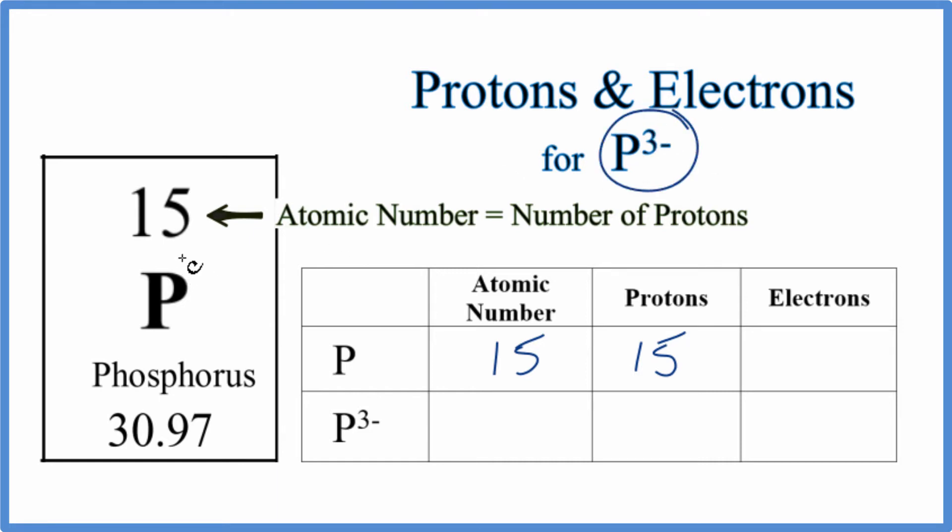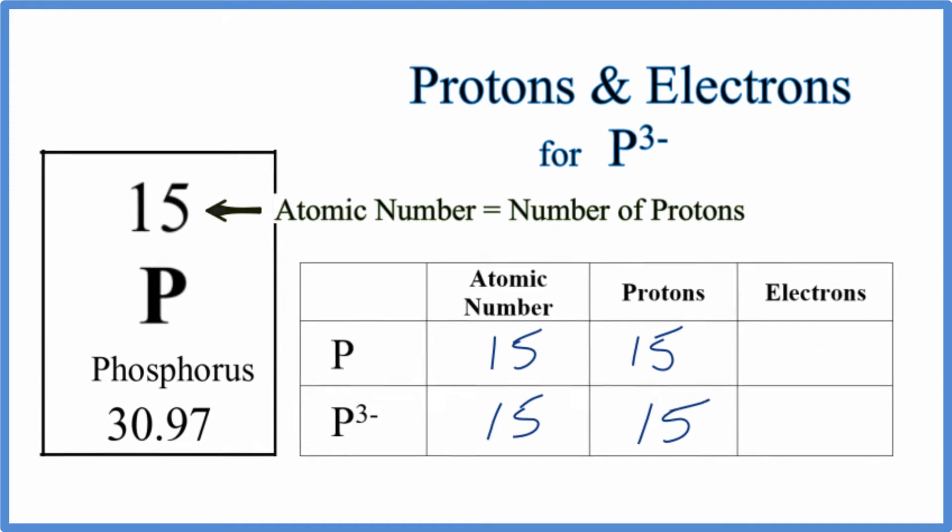When we're comparing an ion like P3 minus to just P, phosphorus neutral phosphorus, the only thing that's going to be different is the number of electrons. So everything else is the same. So P3 minus, atomic number, it's 15, it's still phosphorus, and the number of protons, that's 15 as well. It's only the electrons that are going to be different.